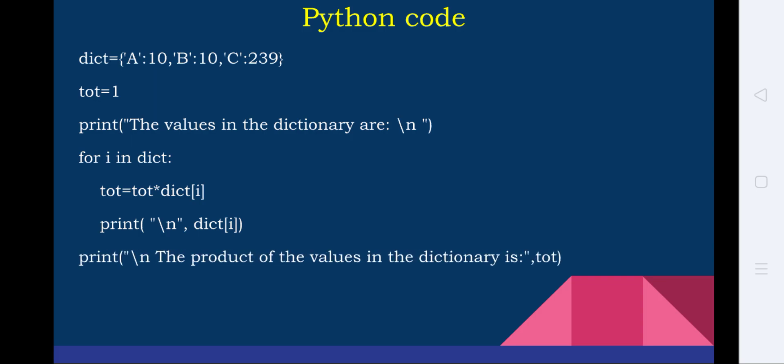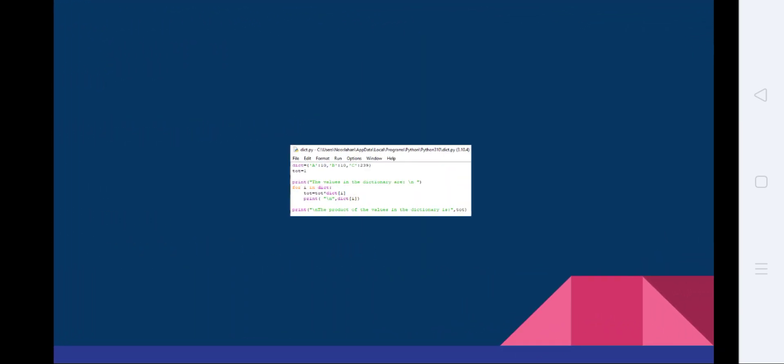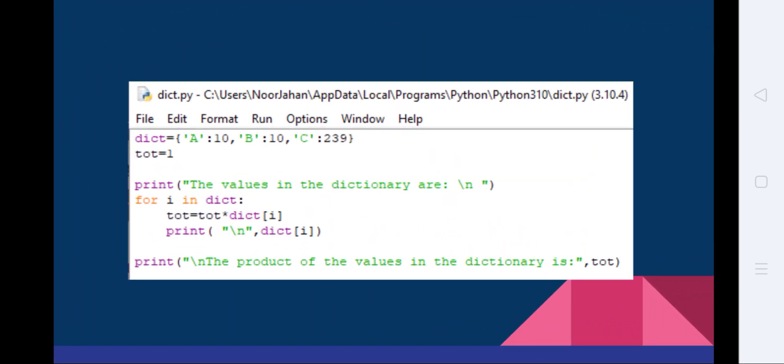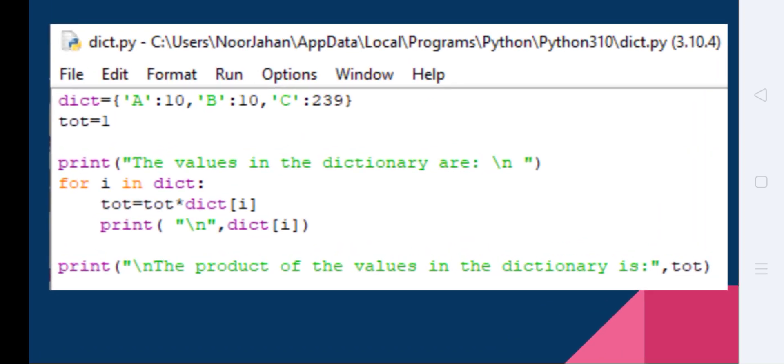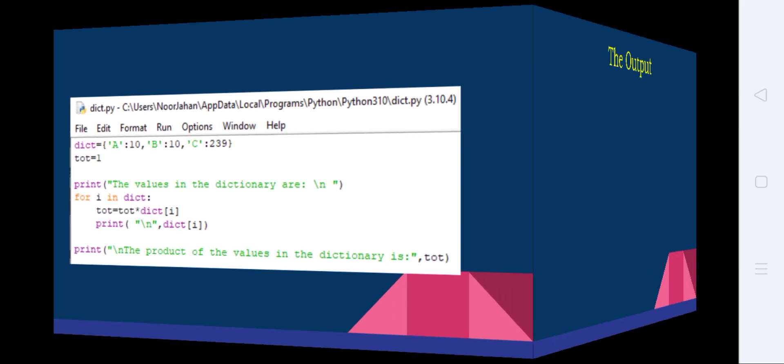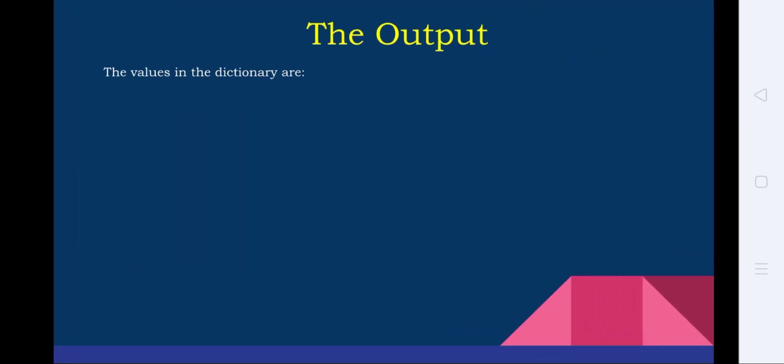Now print the product of the values in the dictionary is TOT. So TOT is the answer we have found out, multiplying all the values 10 into 10 into 239. And in this for loop we are printing all the values of the dictionary, which is 10, 10, and 239. So that's all the program logic. Just I have given a screenshot of the program just to know the spacing. So the same thing is done as a program over here. And now how the output looks like.